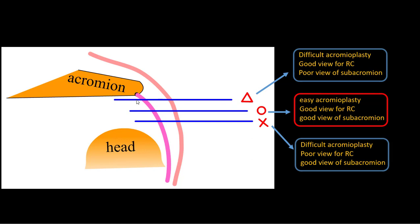The middle one provides easy acromioplasty, good view of the rotator cuff, and good view of the subacromion. You have to choose this portal.